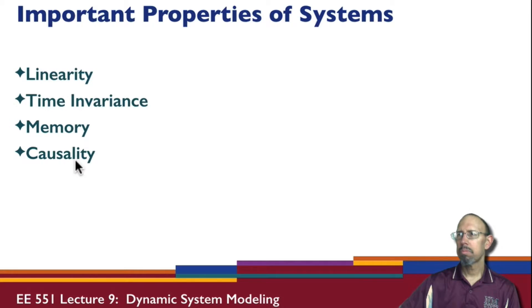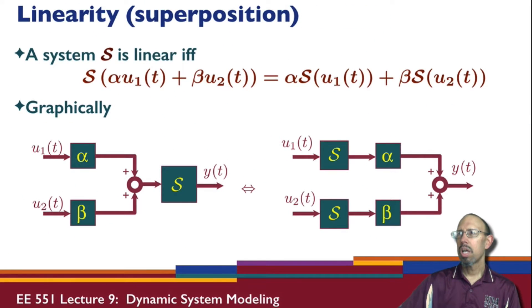First one is linearity, sometimes called superposition. A system is linear if and only if we operate on a weighted sum of inputs and we obtain the weighted sum of the outputs operating on the individual inputs.